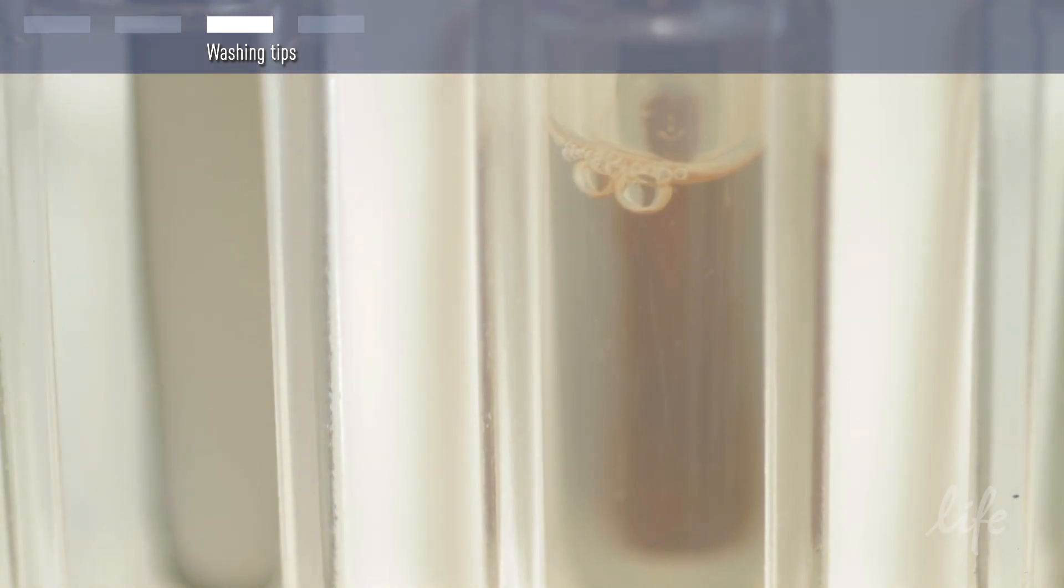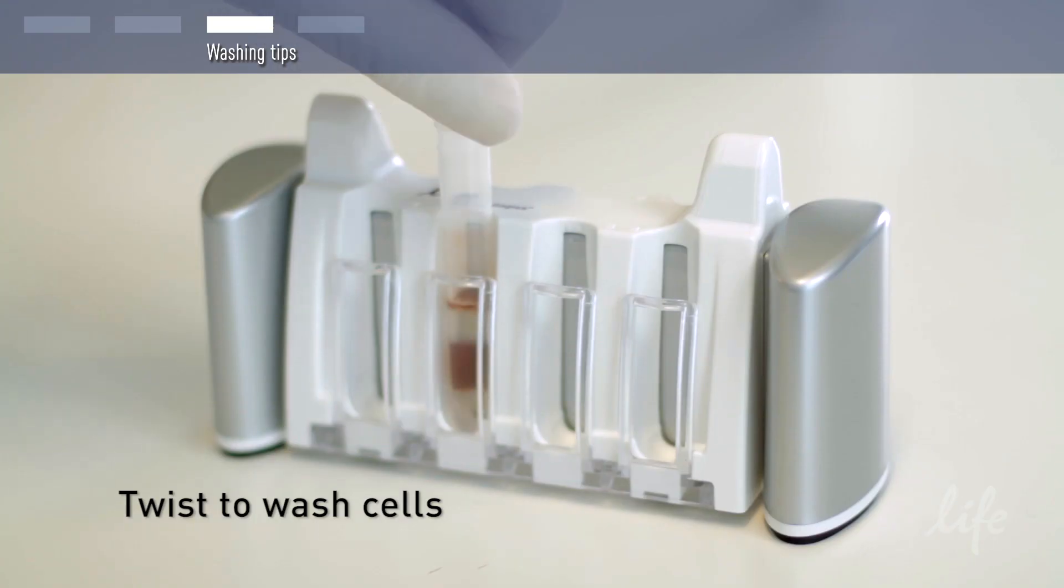Efficient washing is important to get the best possible purity. Here's a great tip. Twist the tube a couple of times. The beads and the bound cells will move through the buffer and that's a great way of washing them.